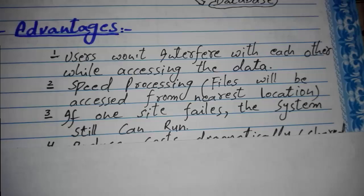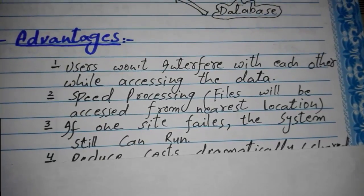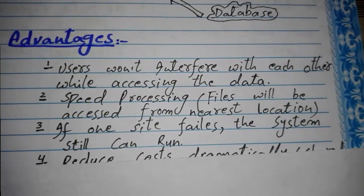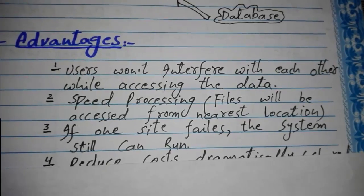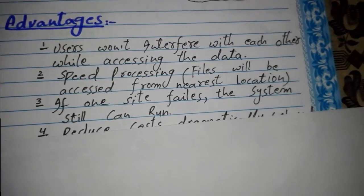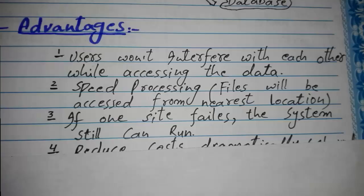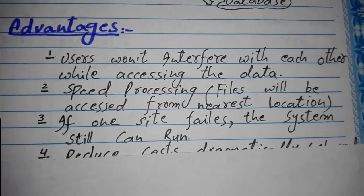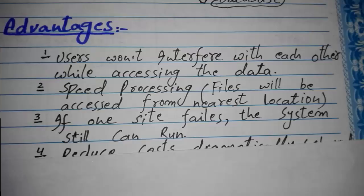The next advantage is if one site fails, the system still can run. Because if one site that is providing distributed database gets crashed or something happens to that site, then another site will provide the data to that specific user, so the system can still run.